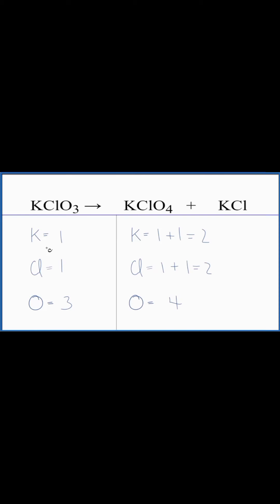Let's balance the potassium and the chlorine first. We put a two here, one times two. That'll give us two, one times two. Two there, three times two. That'll give us six.